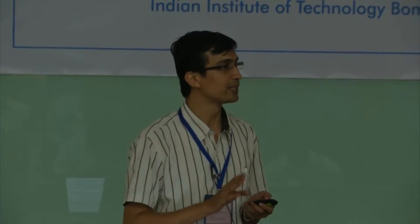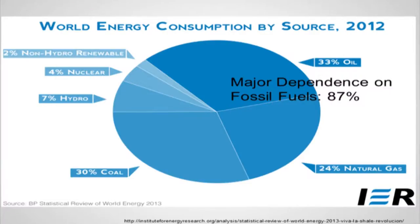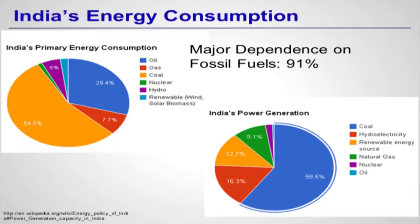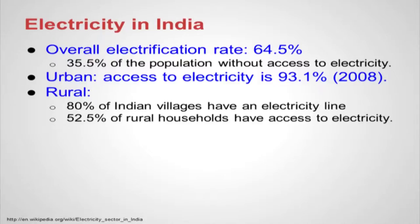How many understand the term intermittent? Not continuous — we all understand the related word intermission. And then we have the non-renewable. Presently, the world depends on fossil-based energy almost entirely — 87 percent dependence on fossil-based energy. India also has major dependence on fossil fuel. In India we have electricity shortages and electricity has not penetrated our rural regions.